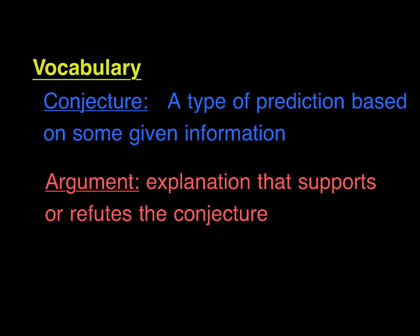Maybe your argument has something to do with the fact that your conjecture doesn't work. Maybe it works for part of the in box and out box, but it doesn't work for all of it. So you would have to explain that in your argument. You're going to be using some conjectures on your paper and some arguments trying to figure out the rules of this in and out box.